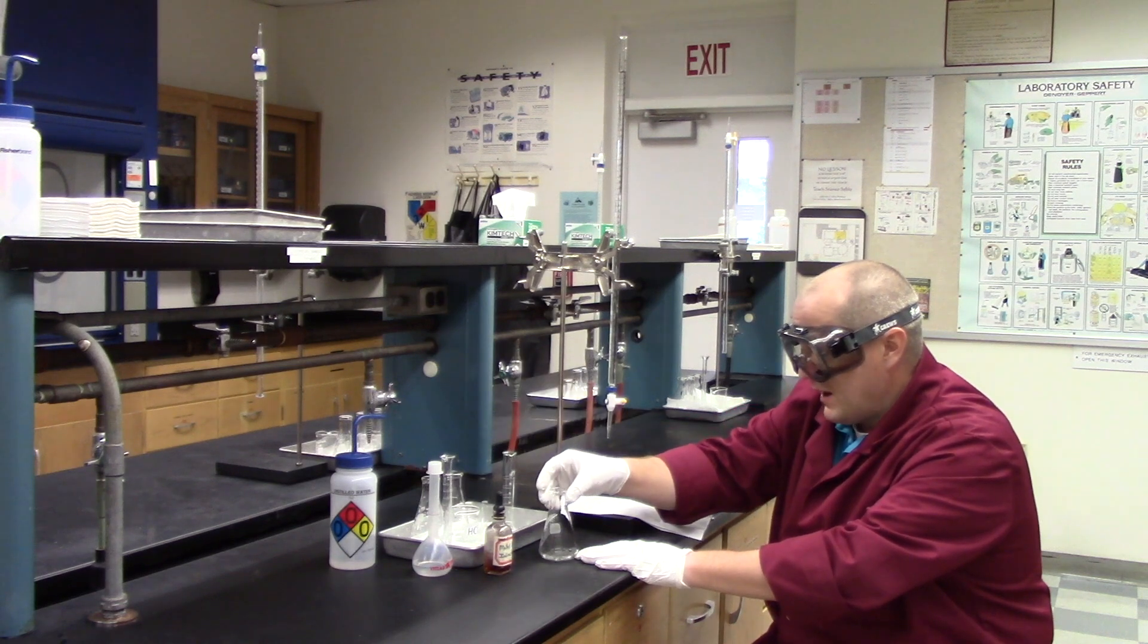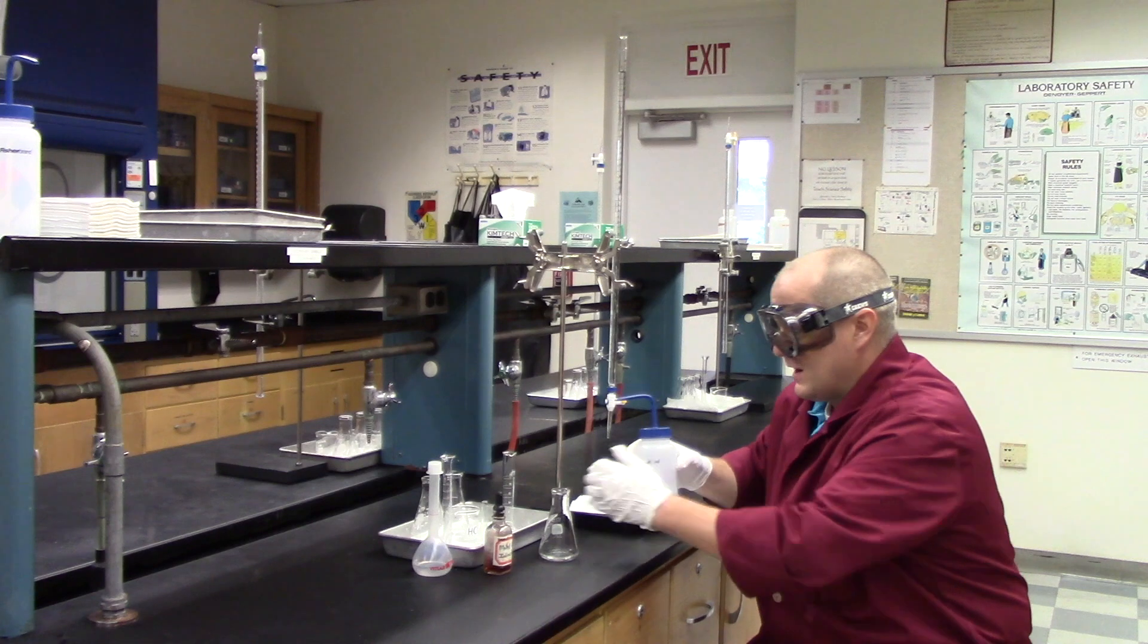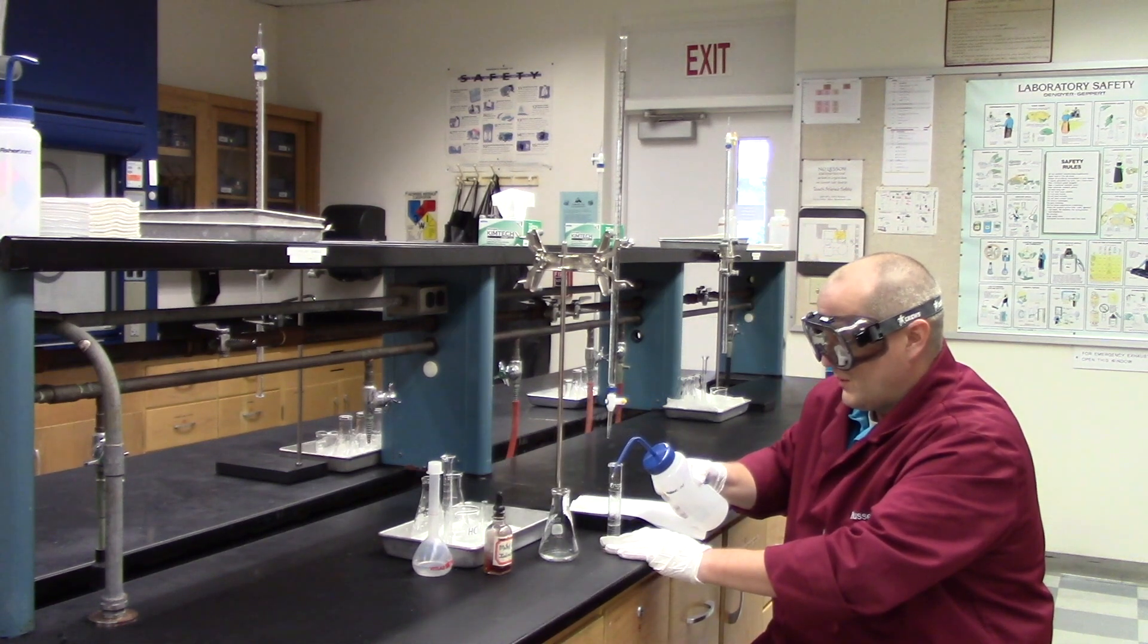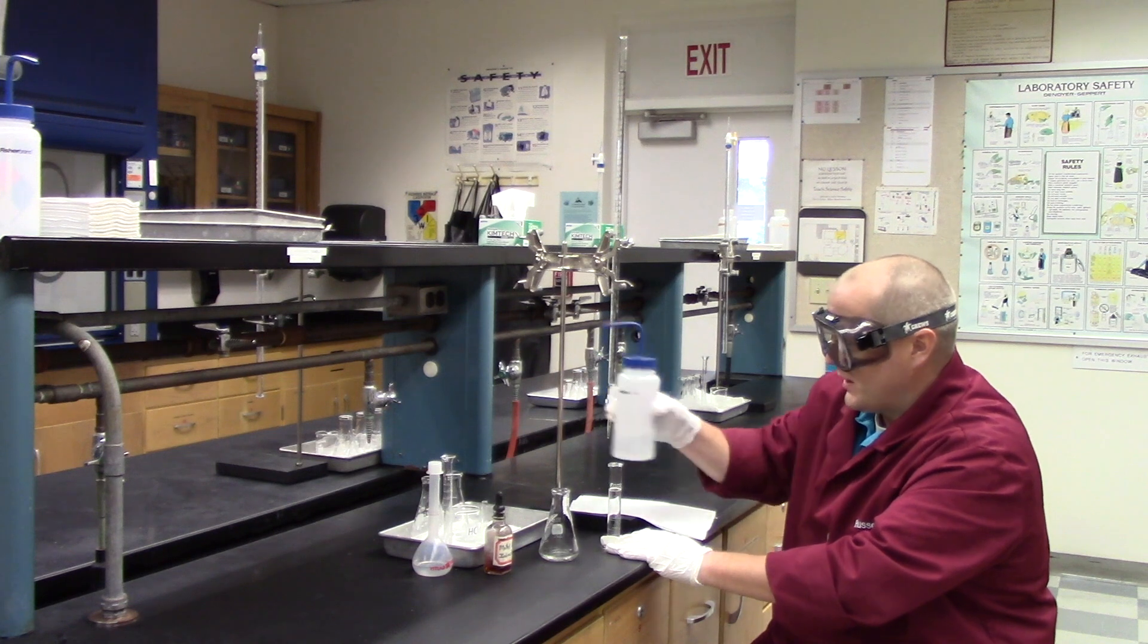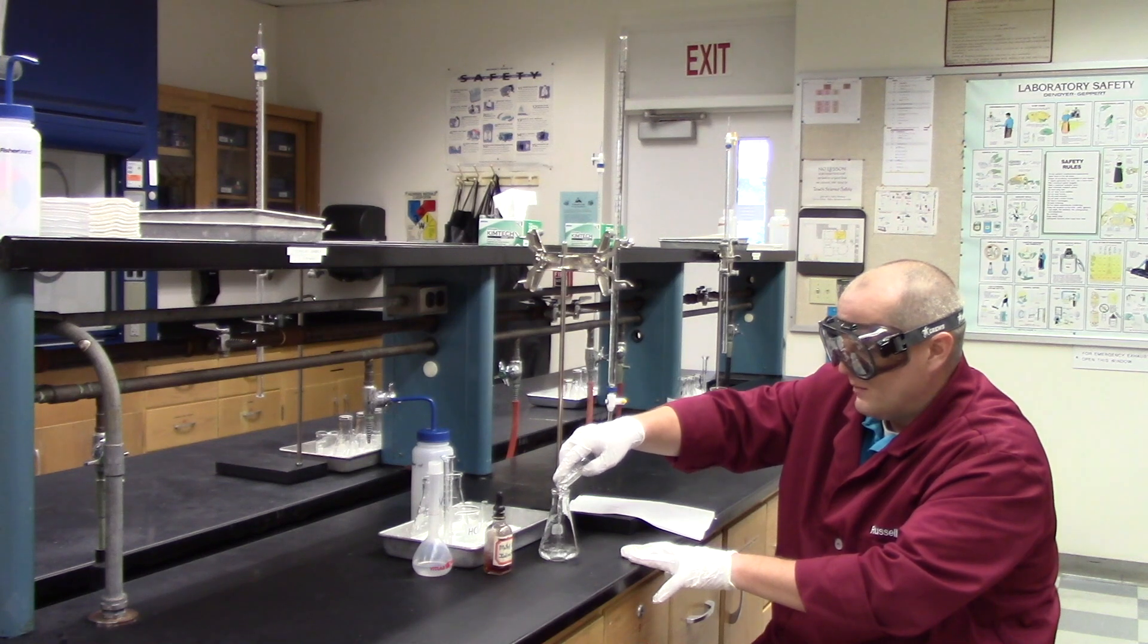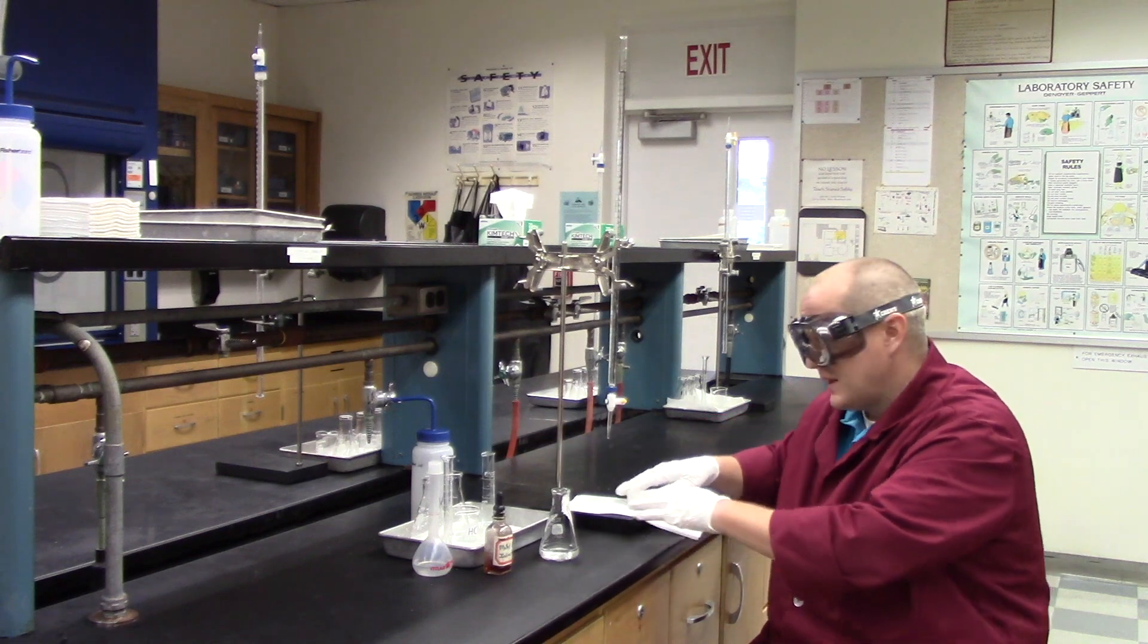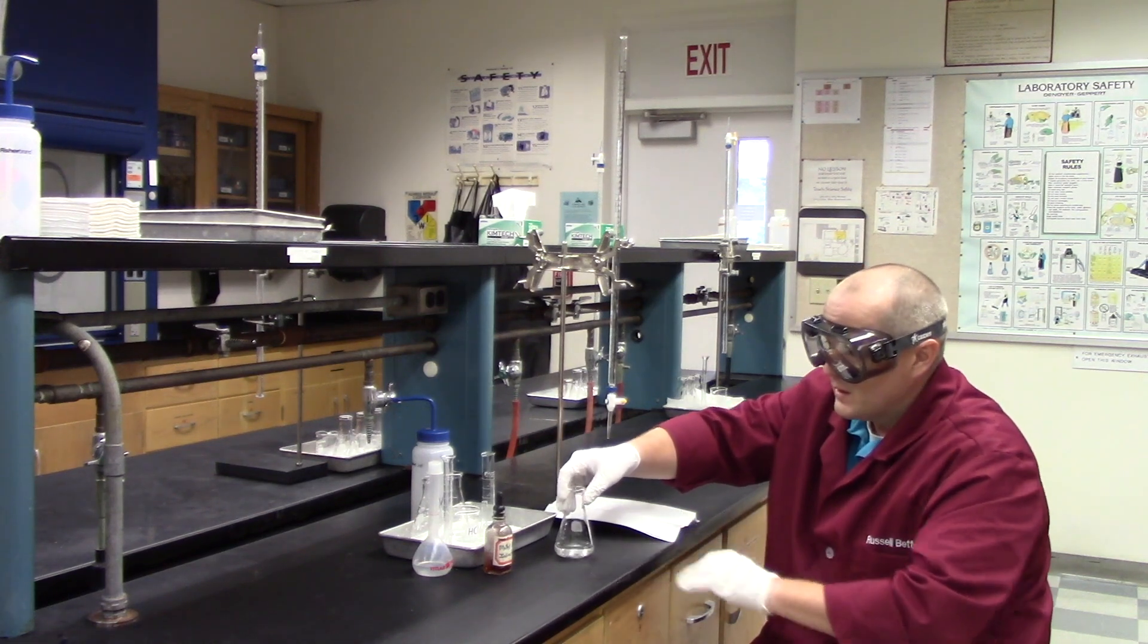Now into this Erlenmeyer that I've placed the 10 milliliters of HCl, I take a 25 mL graduated cylinder, fill it with water, and I add it to the 10 mLs of acid. This 25 mLs of water is not critical if it's exactly 25 mLs. What it's doing is it's simply adding some bulk to our titration so that we can more easily see the color changes. It will be much easier to see because there's just simply more liquid here.